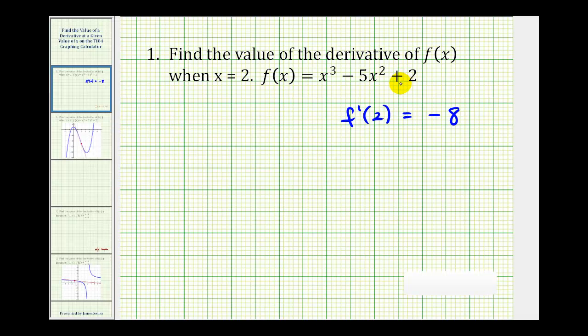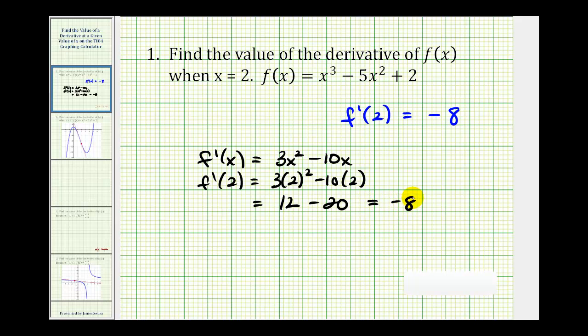Of course, we could verify this by hand. f'(x), using the power rule, would just be 3x² minus 10x. Then we could just sub in 2. So we'd have 3 times 2² minus 10 times 2. Well, this would be 4 times 3, that's 12 minus 20, which is equal to negative 8.